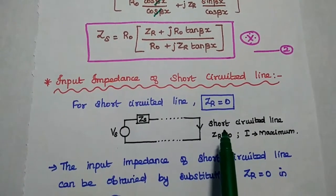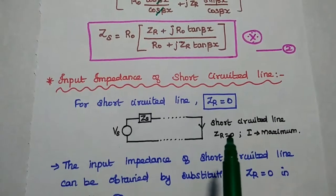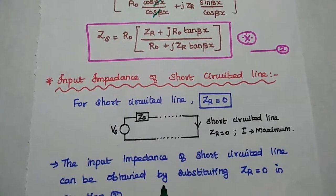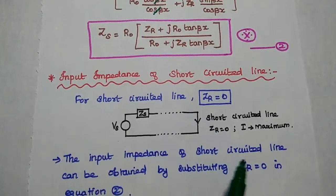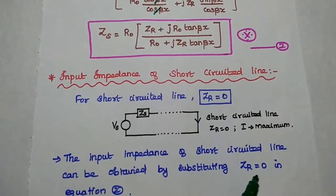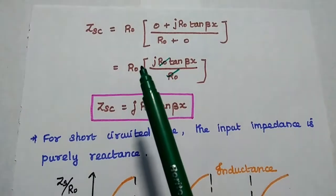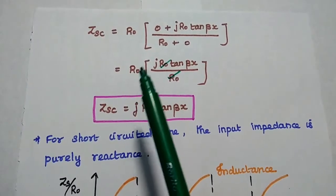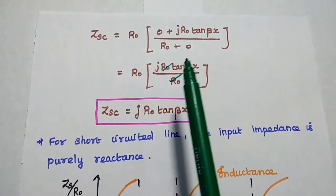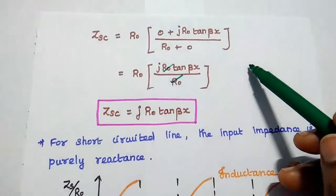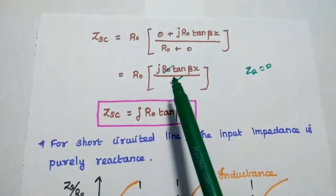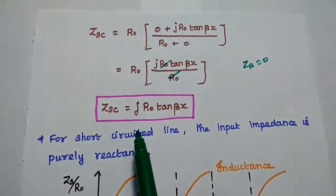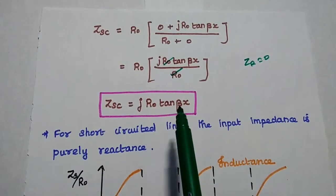You have to remember that for short circuited receiving end, the receiving end impedance becomes 0, current is maximum, and voltage is minimum. We can find the input impedance of the short circuited line by substituting Zr equal to 0 in the second equation. Then we get Zs equal to r0 into 0 plus j·r0·tan(βx), divided by r0 plus 0. Here Zr becomes 0, so we get j·r0·tan(βx) divided by r0, and r0 cancels. Finally, Zs equals j·r0·tan(βx).